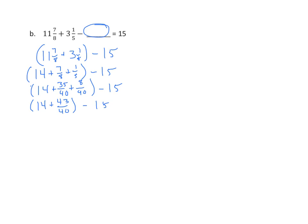Now we're going to simplify this. 40 40ths is 1, so 14 plus 1 is 15 and 3 40ths minus 15 equals 3 40ths. So the number that belongs in that blank is 3 40ths because the sum of 11 and 7 eighths and 3 and 1 fifth is 3 40ths greater than 15. Let's continue.